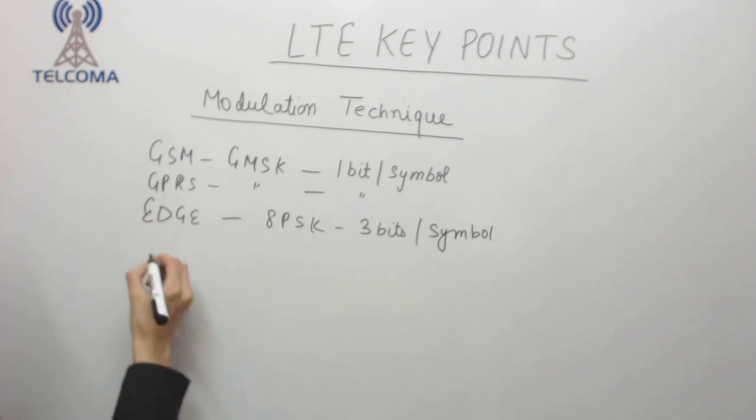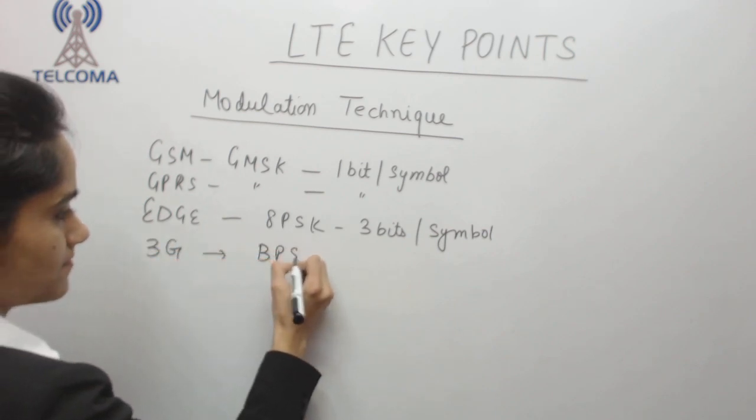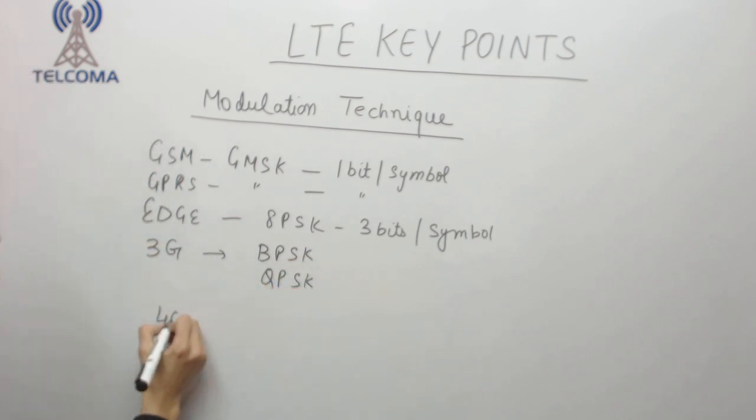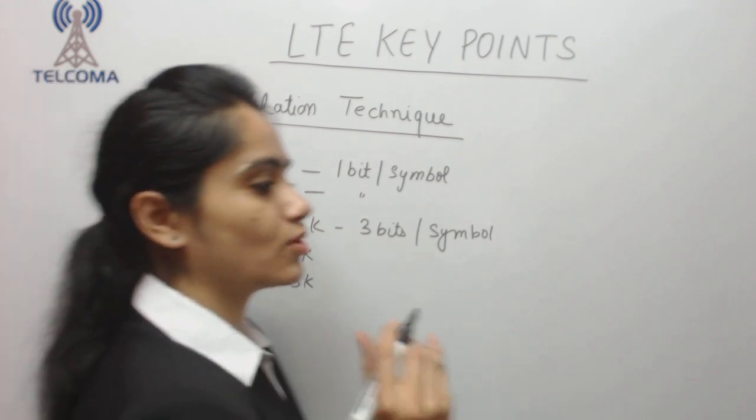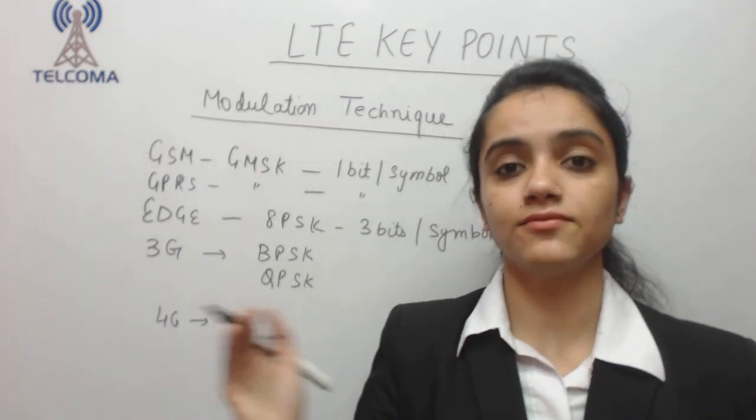After that we have 3G. It is working on BPSK and QPSK. Now in 4G we need to increase the modulation scheme also because bits are being modulated. We have to modulate the data and then we have to transmit.